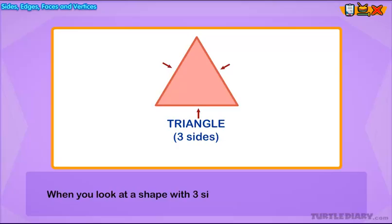When you look at a shape with three sides, you know it is a triangle. These are some other shapes that can be identified by looking at the number of sides.